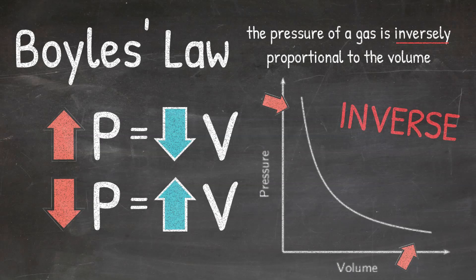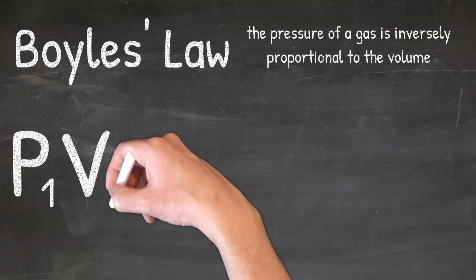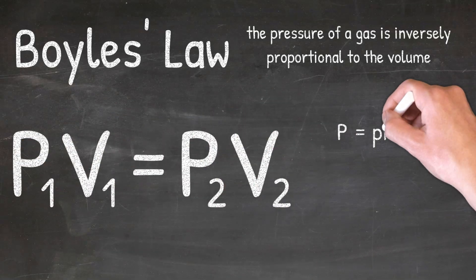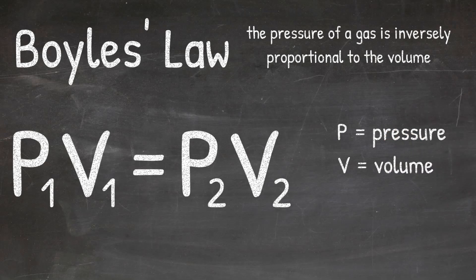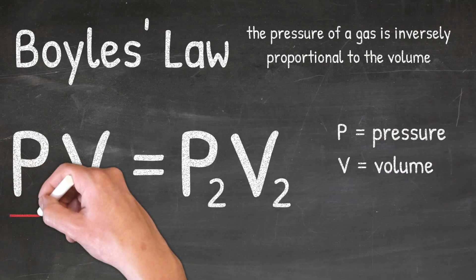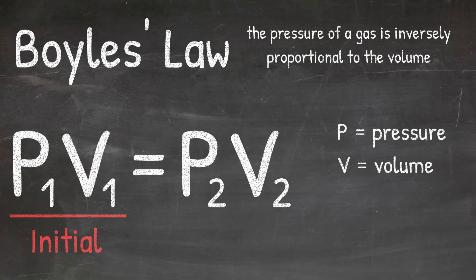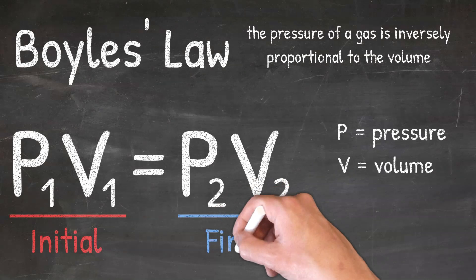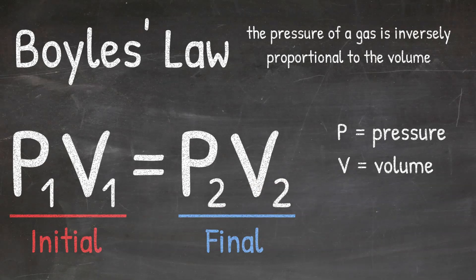When it comes to solving gas law problems using Boyle's Law, we can use the formula P1V1 equals P2V2, where P stands for pressure and V stands for volume. The 1 represents the initial pressure and the initial volume — just the pressure and volume you are starting with — while the 2 represents the final pressure and the final volume. So now that we know the formula for Boyle's Law, let's look at some Boyle's Law practice problems.